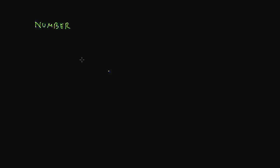When we talk about numbers, it all starts from counting, and when we begin numbers, we start from natural numbers. When we talk about natural numbers, we're talking about the way we count: 1, 2, 3, 4, 5 and on and on. So these are natural numbers.